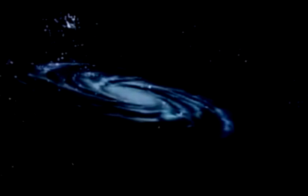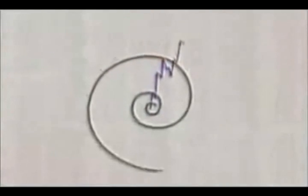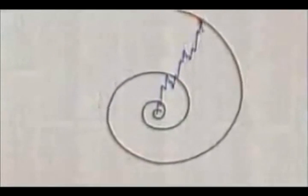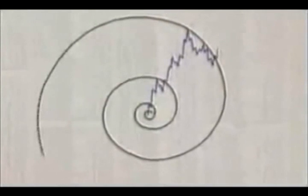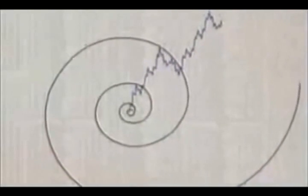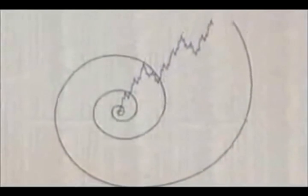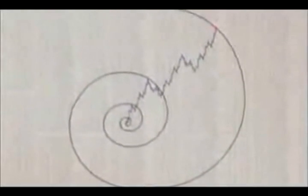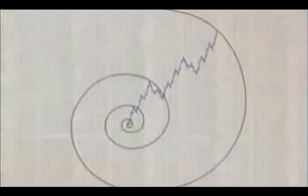So how do these spirals connect to socionomics? The idealized depiction of the stock market's progress can be seen as a spiral. The top of each successive wave of one higher degree serves as a touchpoint for the exponential expansion, and it begins to look like the pattern of a hurricane or galaxy.